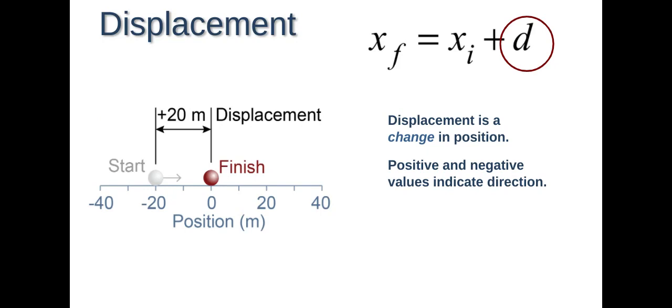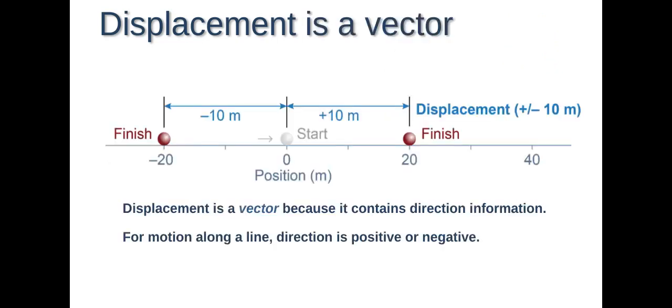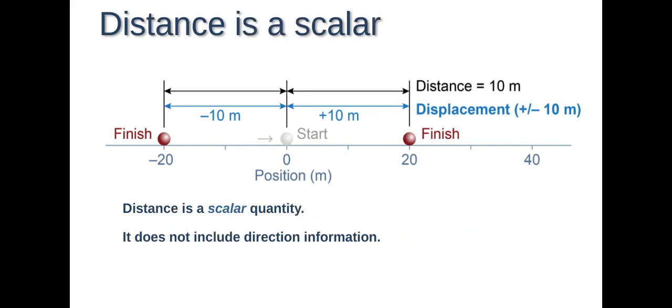Displacement is a change in position. Positive and negative values indicate the direction of movement. So in the picture here, the start is at negative 20 and it ends up at zero. So that means there's actually a positive displacement of 20 meters, because it's moving 20 to the right. Displacement is a vector. Vector quantities have a direction with their magnitude, while a scalar quantity is just a magnitude or just a value. Distance is a scalar. So distance is actually 10 meters in this example, because it's not including directional information.